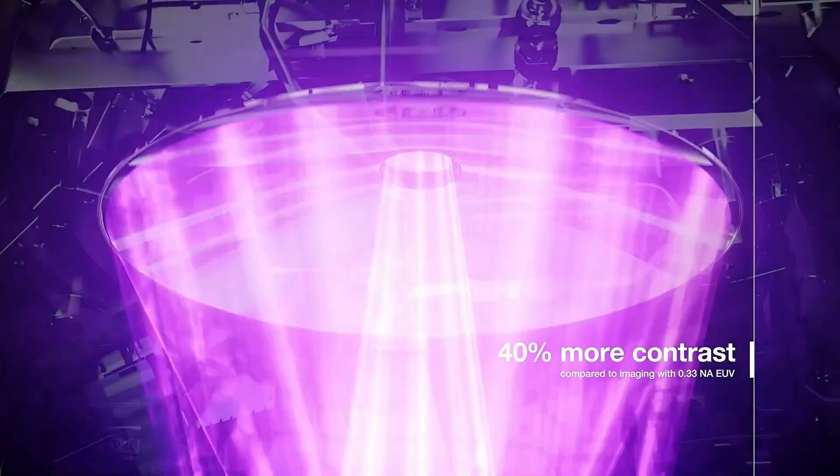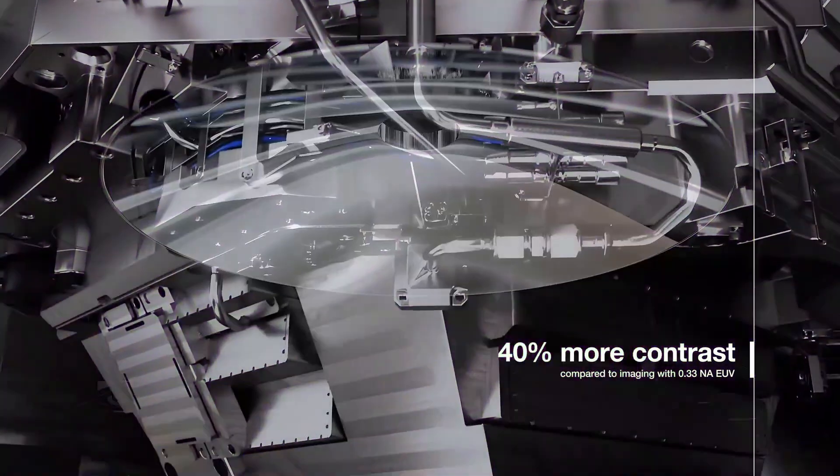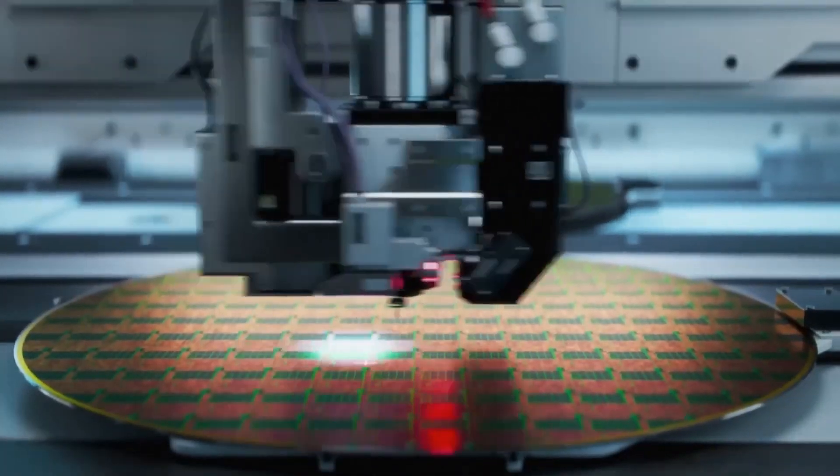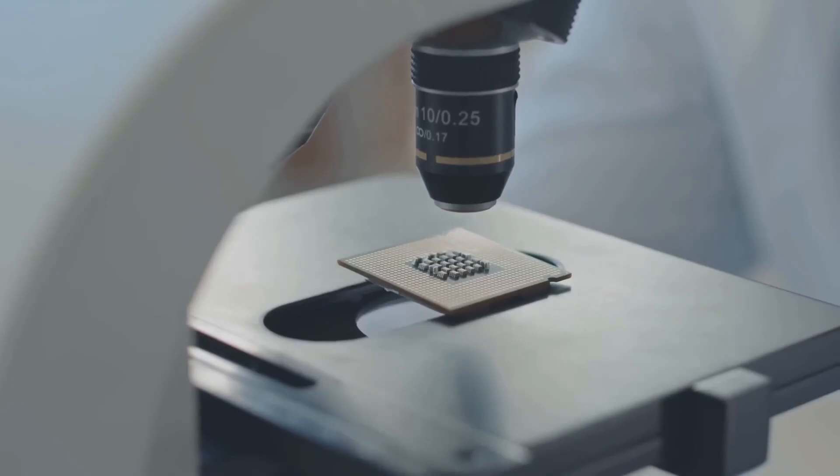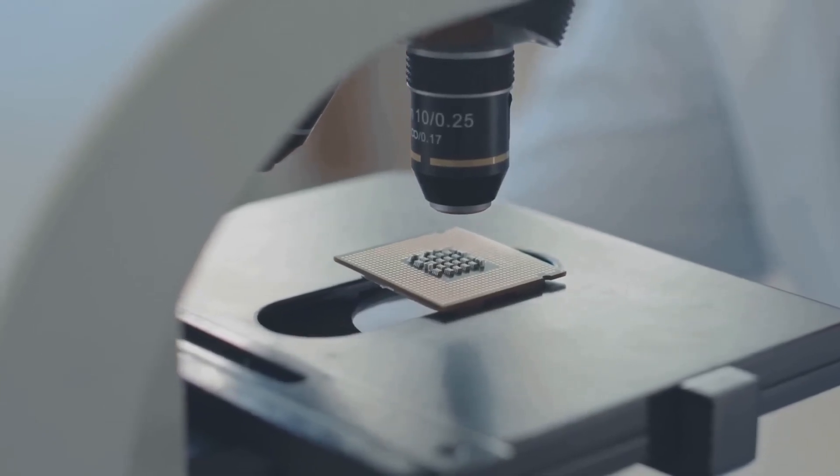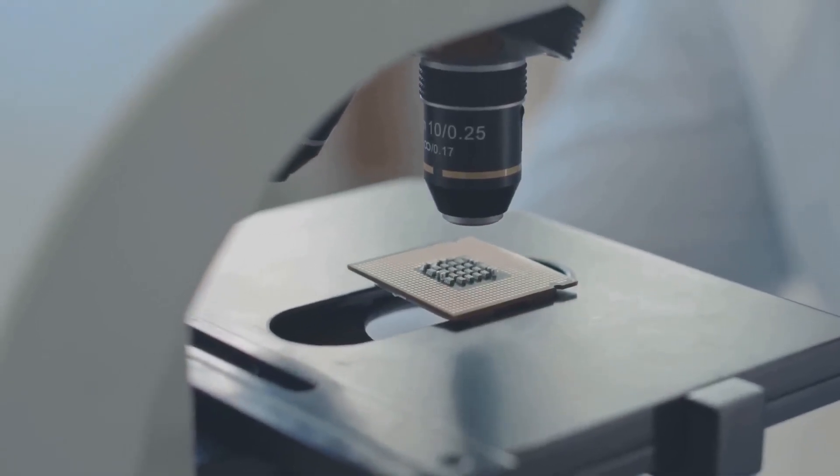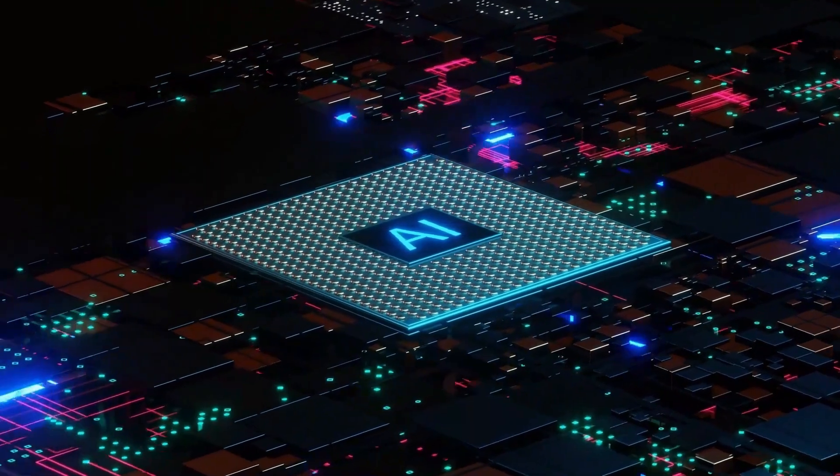If China can improve its new 193nm laser and combine it with advanced patterning methods, it could produce 5nm and even 3nm-class chips without EUV. These chips may not match EUV perfection, but they would be powerful enough.